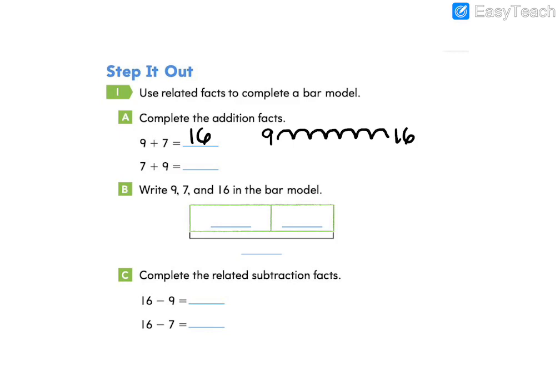So now let's look at seven plus nine. Because we know that nine plus seven is 16, we also know that seven plus nine is 16.